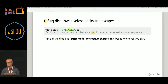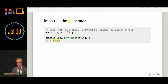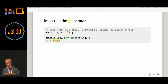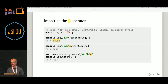Let's talk about the impact of the U flag on the dot operator. In ECMAScript 5, or without the U flag, the dot operator will match any BMP symbol except for line terminators. So if you use the regular expression A.B and try to match a string like 'A' + tetragram for center + 'B', it wouldn't work because the tetragram is an astral symbol. We can fix this by simply enabling the U flag, which magically makes the dot operator match any symbol in Unicode except for line terminators.